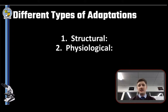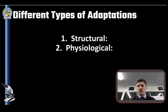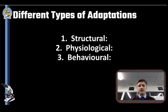The next type is physiological adaptations, often called functional adaptations — this is how an organism works internally in response to the environment or to another organism. And finally we have behavioral adaptations — this is what the organism does. These can be inherited innate traits or instincts, and they can also be learned behaviors.